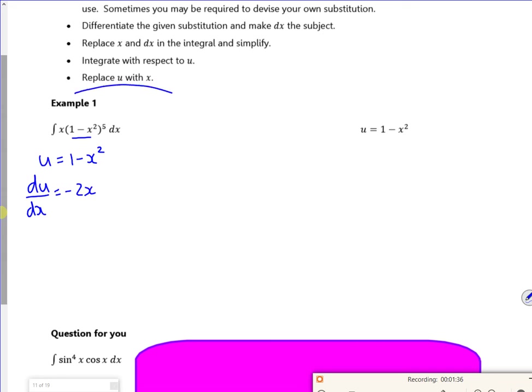Now what I want to do is replace all the u's with x's. So I'm going to rearrange this equation, so I can replace the dx. So I'm replacing this bit with u, I'm going to replace the dx. So I've got du, or minus du over 2x is dx.